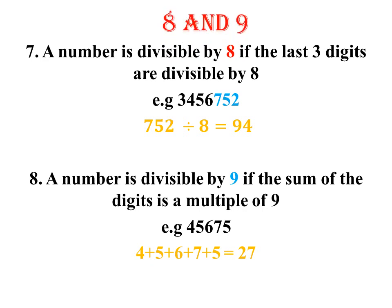The next one is 8. A number is divisible by 8 if the last 3 digits are divisible by 8. In our example, we have got the last 3 digits as 7, 5, 2. So 752 — when you divide it by 8, we are going to get 94. And since 8 perfectly divides into 752, then that number is divisible by 8.